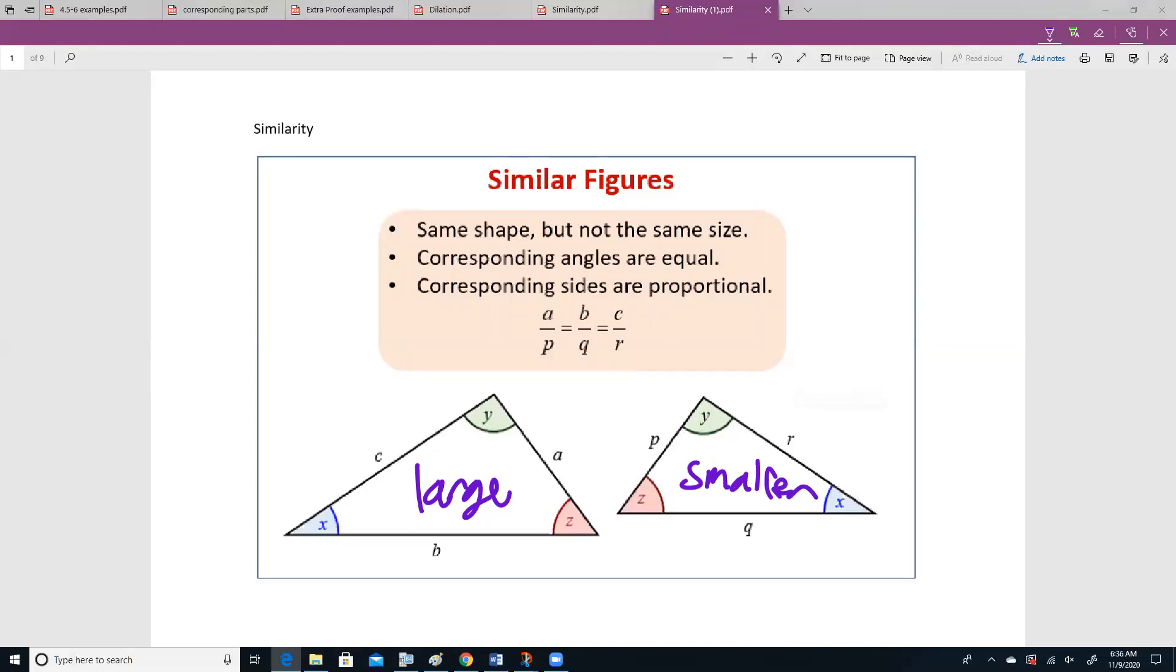The corresponding angles are equal. So just because one is larger than the other doesn't mean the angles are larger. This angle marked y and the other angle marked y, they are the same. It doesn't matter which one I was pointing to because both angle y's are the same, same with z and x. It's just our sides that have increased in size.